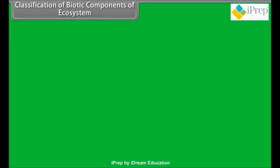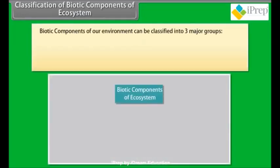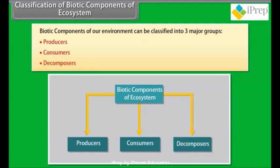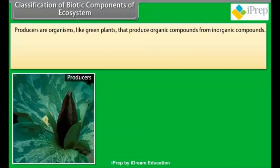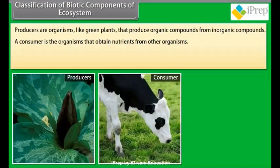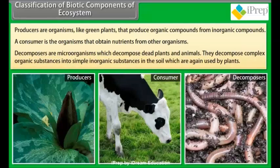Biotic components of our environment can be classified into three major groups: producers, consumers, and decomposers. Producers are organisms like green plants that produce organic compounds from inorganic compounds. A consumer is an organism that obtains nutrients from other organisms.